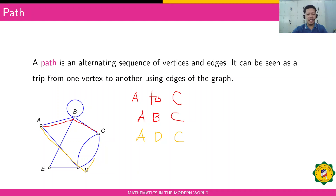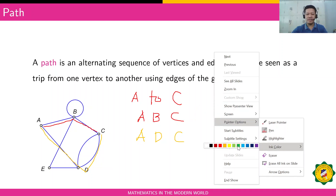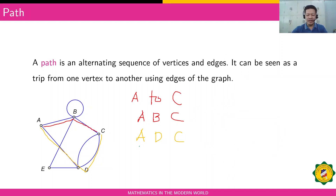You can also have the path A, E, and C. If you want a longer path, you start with A, go to B, then vertex E, then proceed back to B, and arrive at C — giving you the path A, B, E, B, and then C. That is also a path.